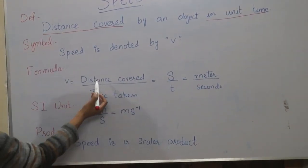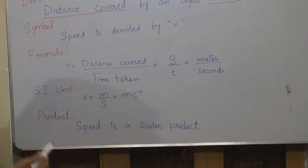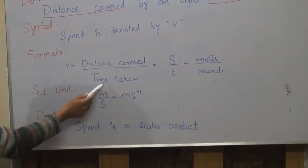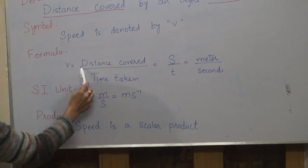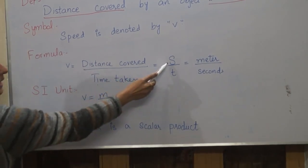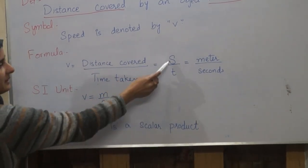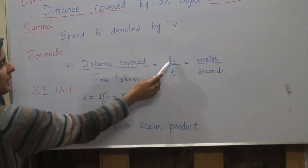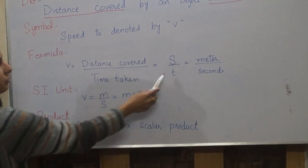So speed is the distance covered by a body or by an object in a unit time. We denote distance by S, means distance is denoted by S and time is denoted by T.